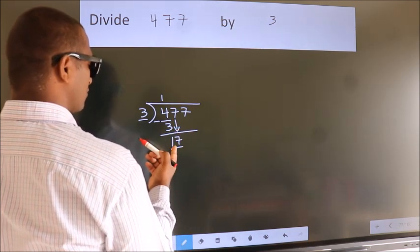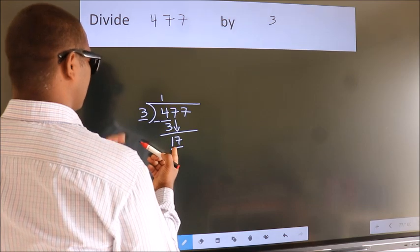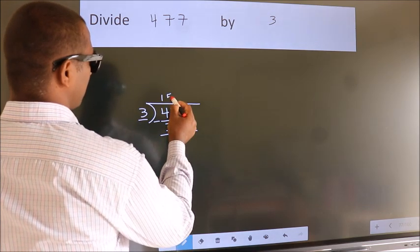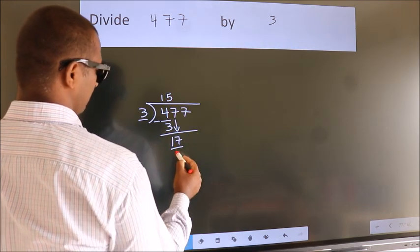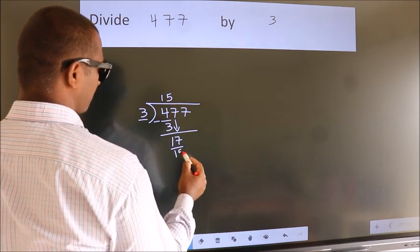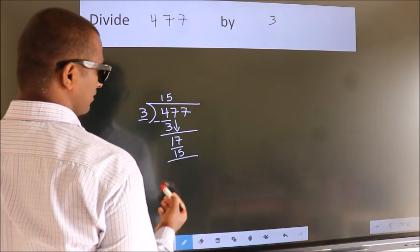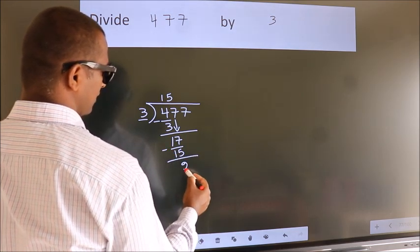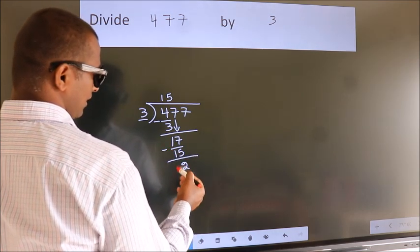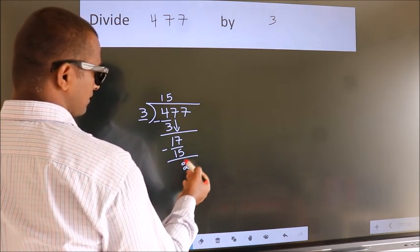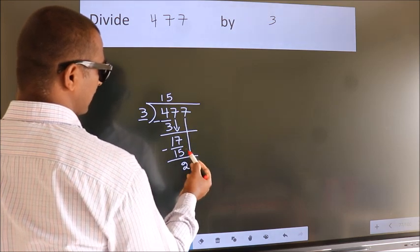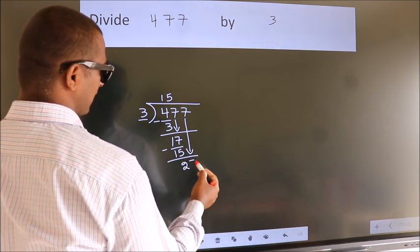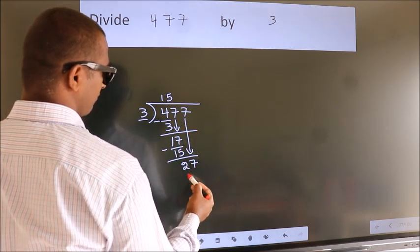A number close to 17 in the 3 times table is 3 fives are 15. Now we subtract. We get 2. After this, bring down the beside number — so 7 comes down, giving us 27.